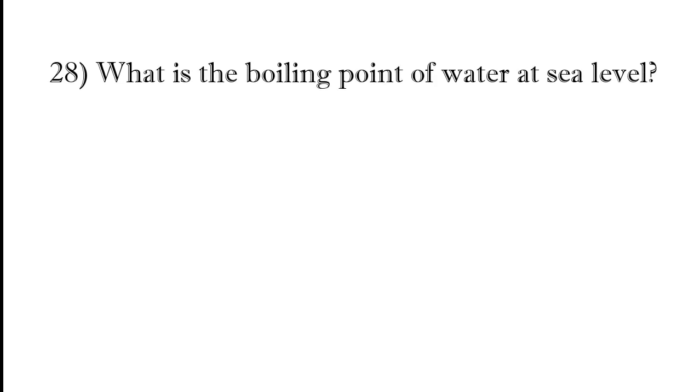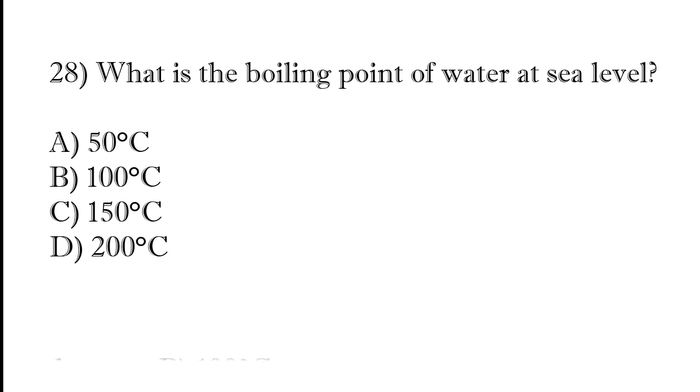What is the boiling point of water at sea level? Fifty degrees Celsius, one hundred degrees Celsius, one hundred fifty degrees Celsius, or two hundred degrees Celsius. The correct answer is option B, one hundred degrees Celsius.